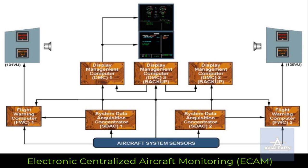The DMCs acquire data and transmit it to the display units, DUs, which generate the images. Under normal circumstances, DMC1 supplies both EECOM displays. DMC2 and DMC3 are available as a backup.